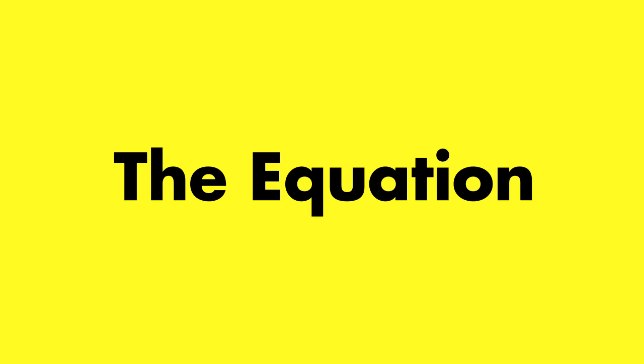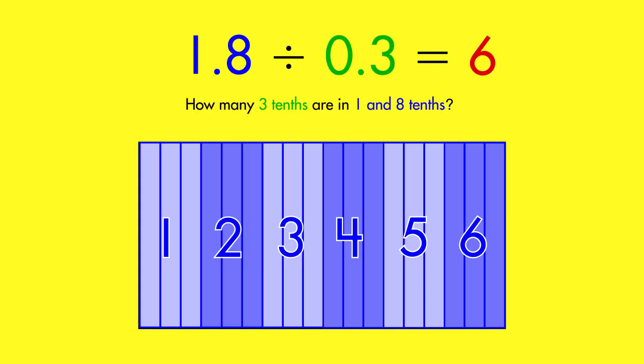Let's look at another way to solve problems like this. To divide, move the decimal in the divisor to the right, and then move the decimal in the dividend the same number of places. Then, divide to find the quotient.